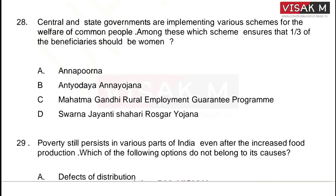Central and state governments are implementing various schemes for the welfare of common people. Among these, which scheme ensures that one-third of the beneficiaries should be women? The answer is option C, Mahatma Gandhi Rural Employment Guarantee Scheme.